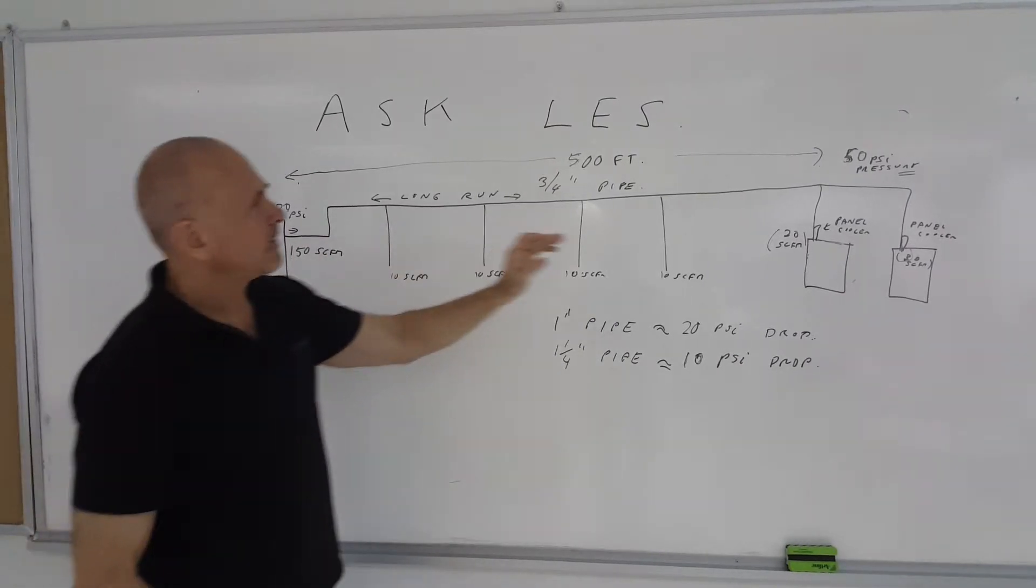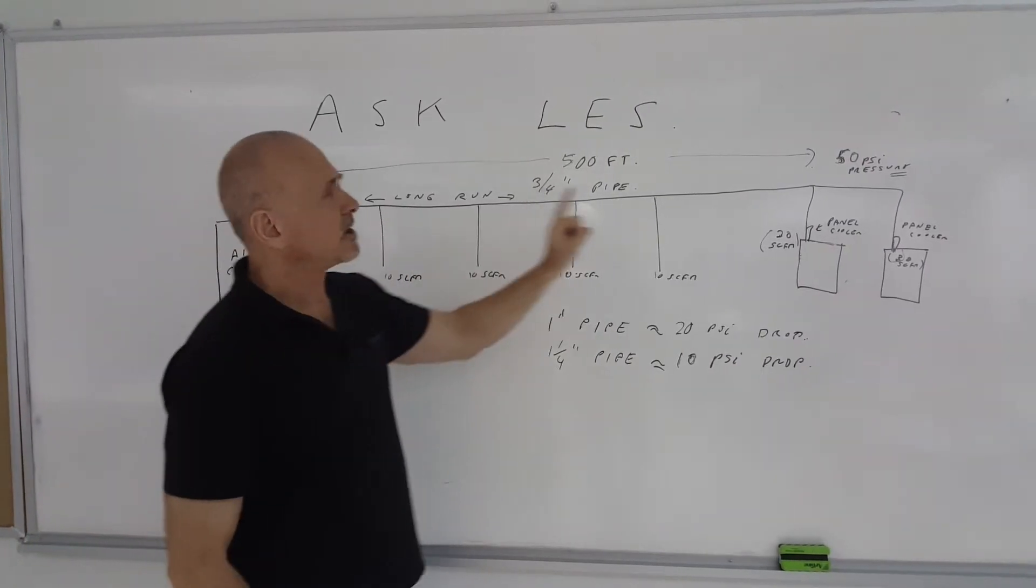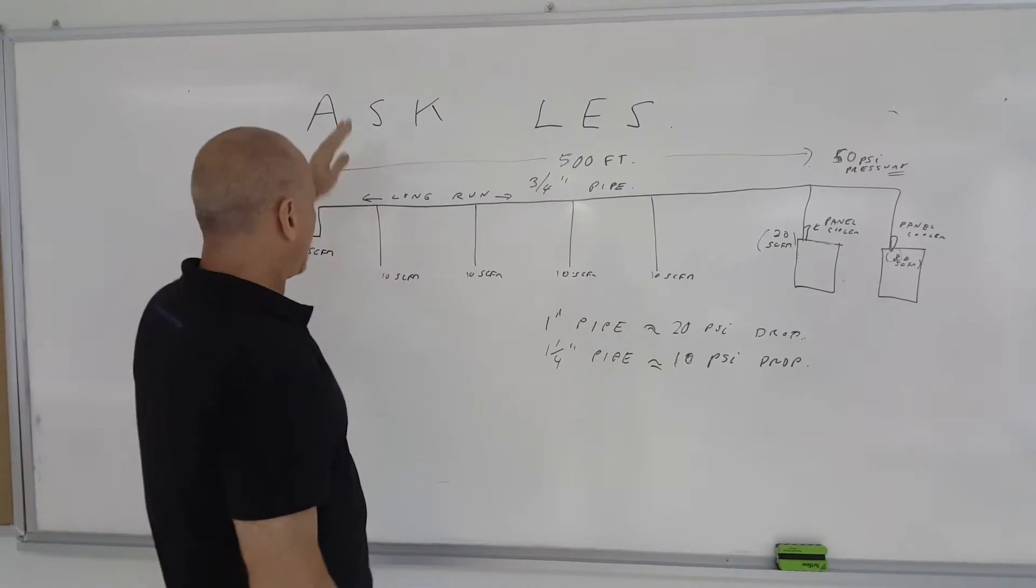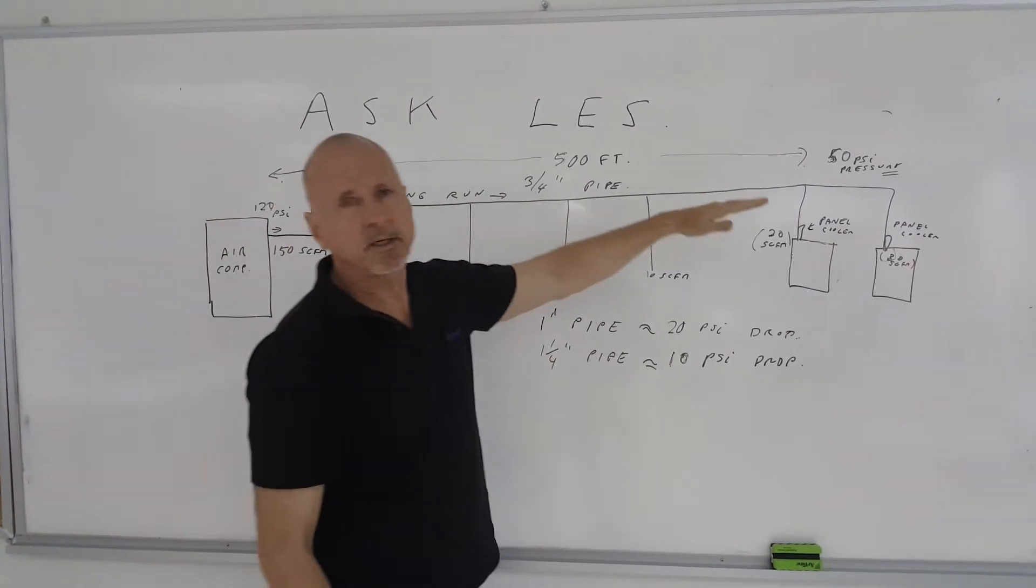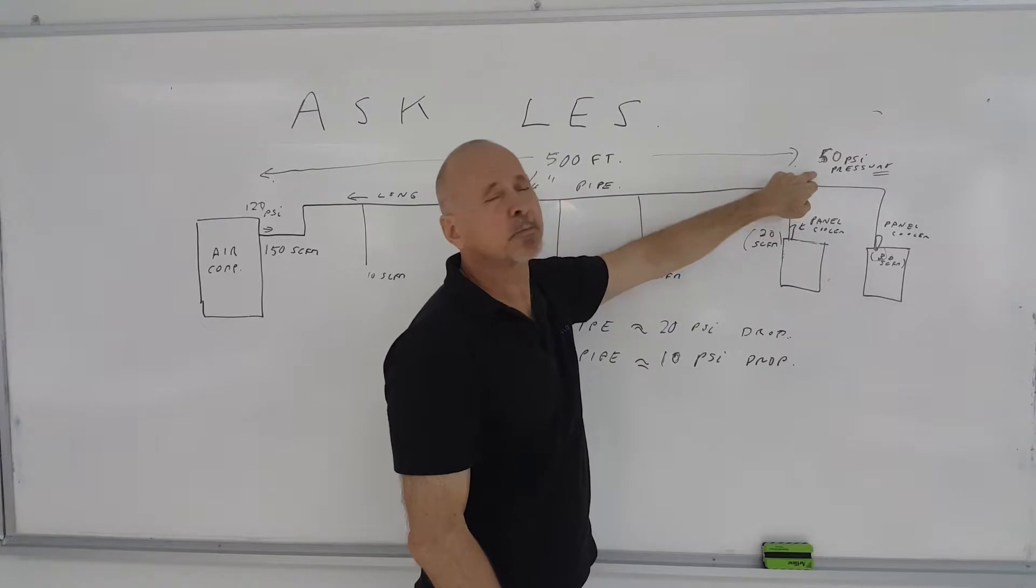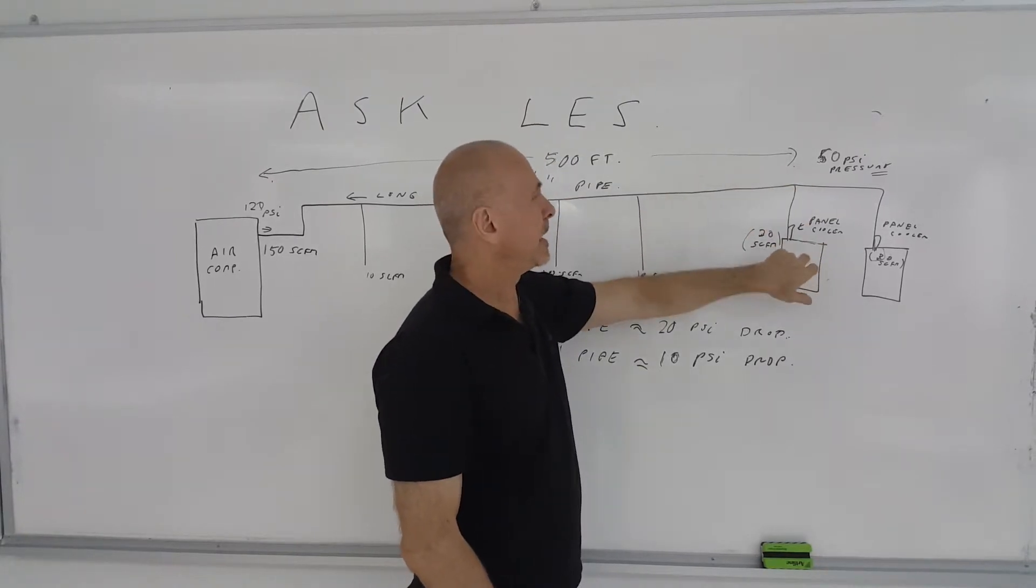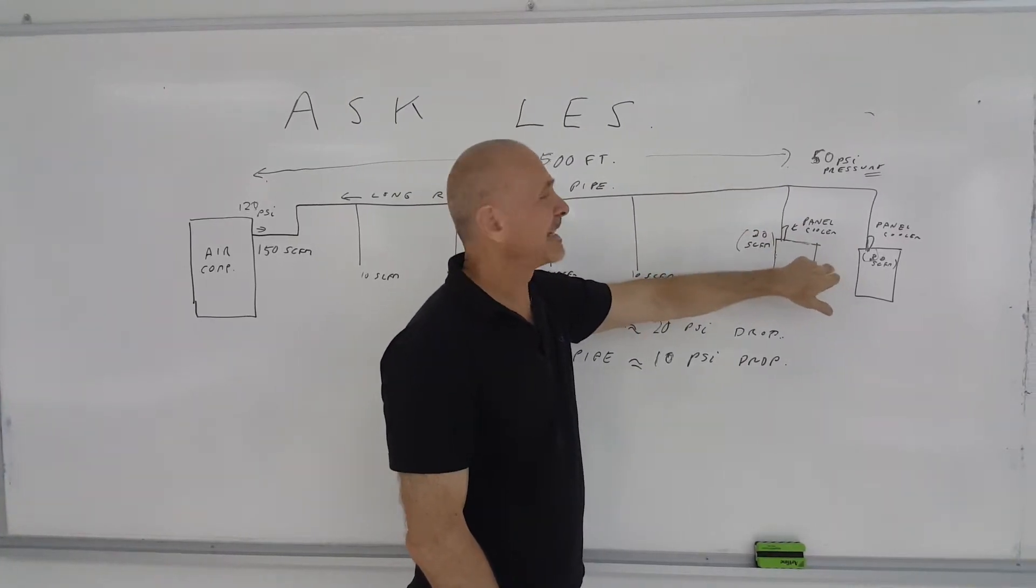If you're running 60 CFM through three-quarter inch pipe with fittings, bends, and everything else considered, you're going to end up with about a 50 pounds per square inch pressure drop by the time you get to those coolers. That's significant.